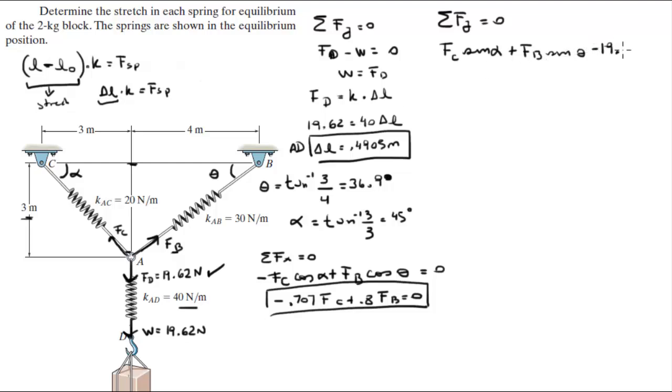minus the weight, creates a 19.62 force going down, is equal to 0. So basically this is 0.707 F_c plus 0.6 F_b is equal to 19.62.